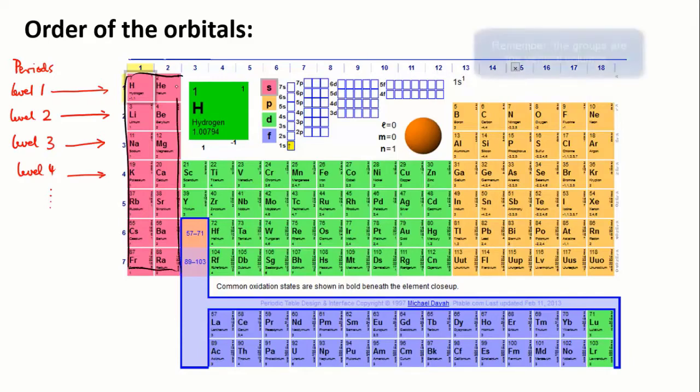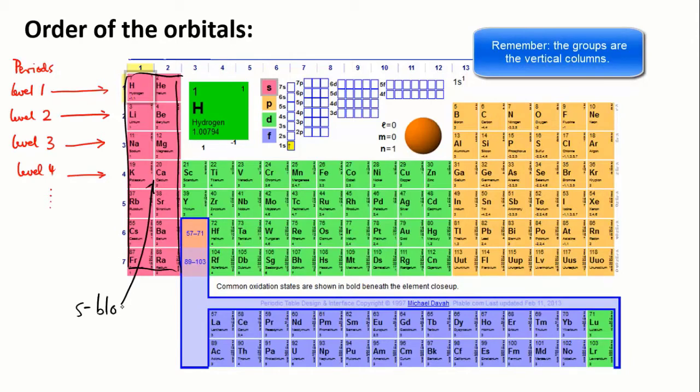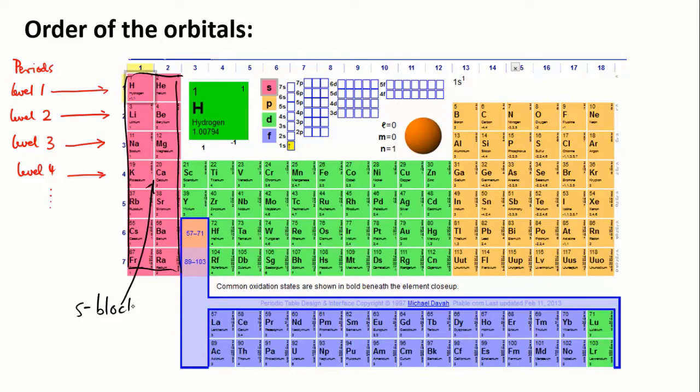The second thing is that the element groups can be divided up into blocks. The first two groups, group 1 and group 2, are called the s-block. This is because all the elements in this block have their outermost valence electrons in an s-orbital. The right-hand side, colored orange, is called the p-block. All the elements in this block have their outermost valence electrons in a p-orbital.